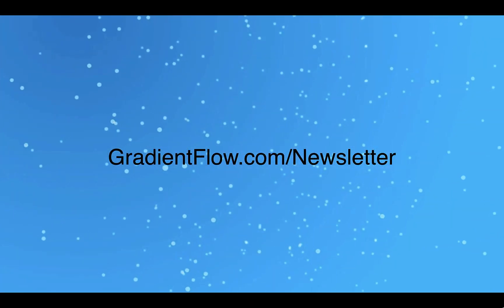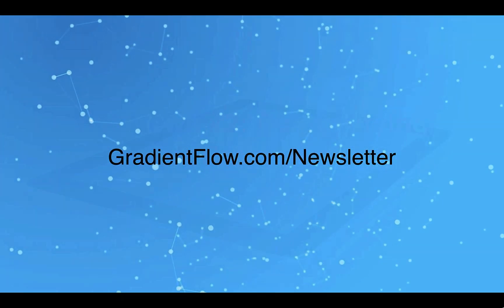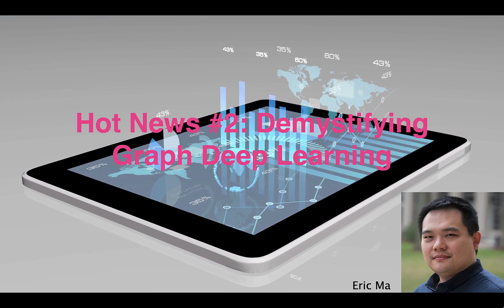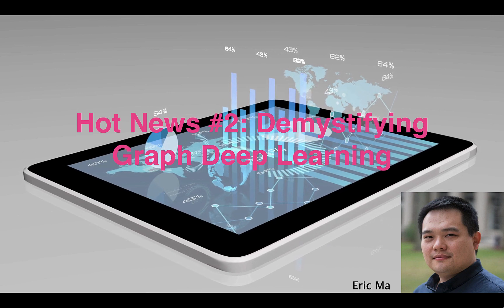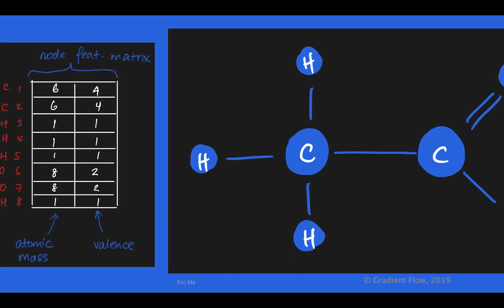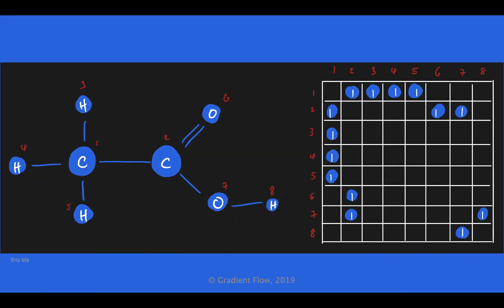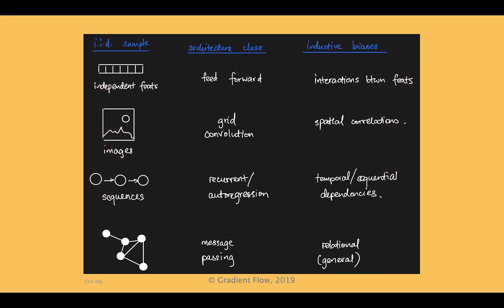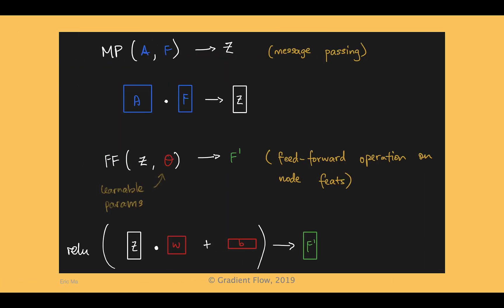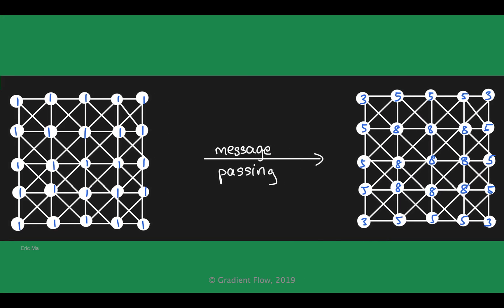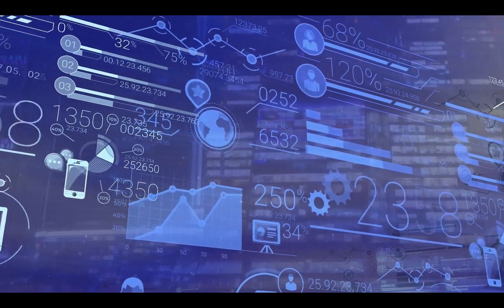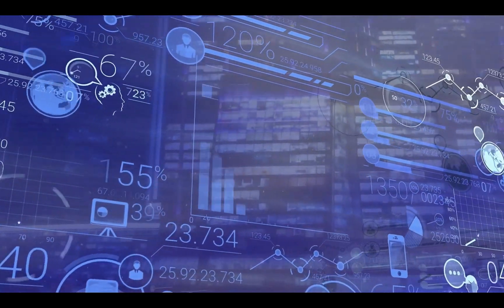See Gradient Flow Newsletter number 43 for more. A new post by Eric Ma uses graphs to attempt to demystify graph deep learning. The graphs start with nodes and edges as arrays, and cover message passing and neural networks, as well as grid convolution and graph convolution. Ma includes explanatory text with the graphs to cover some of the most important fundamentals of graph deep learning.